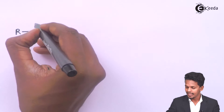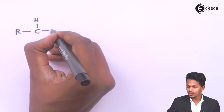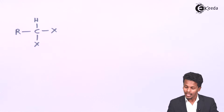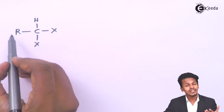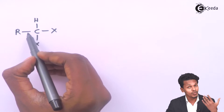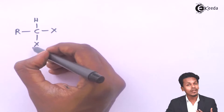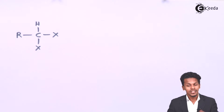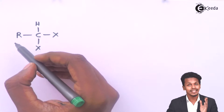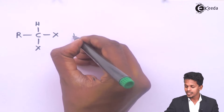In this germinal dihalide, two halogen atoms are attached to the same carbon atom. If we consider the R group as an alkyl group, then this would be the terminal or first carbon atom, and both halogen atoms are attached to it — making it a dihalide where both halogens are on the terminal carbon.